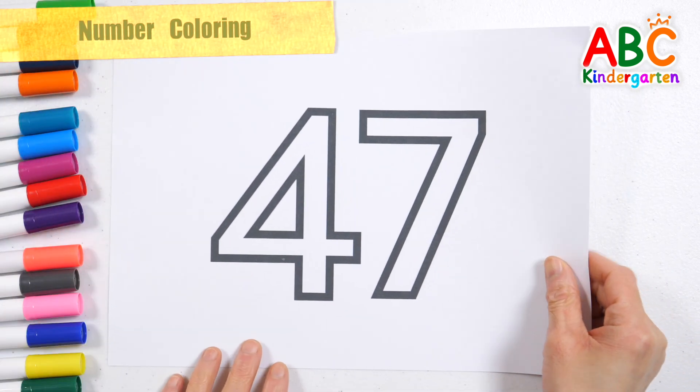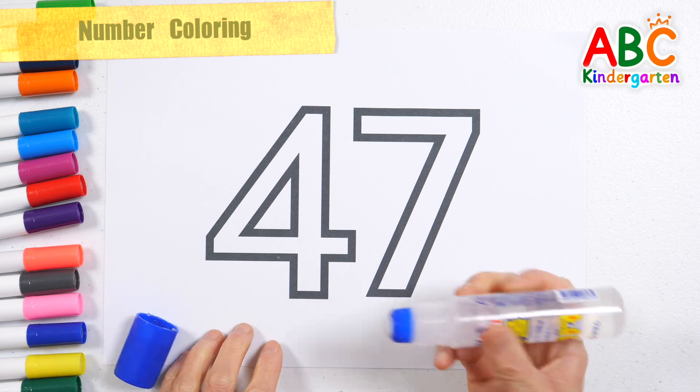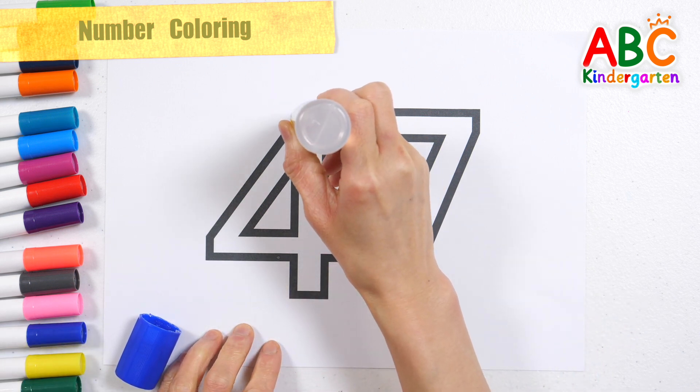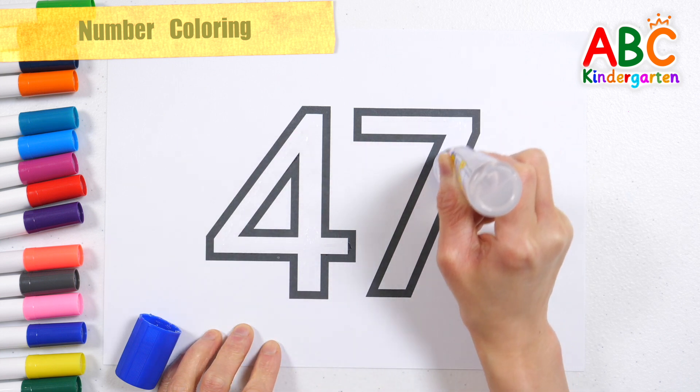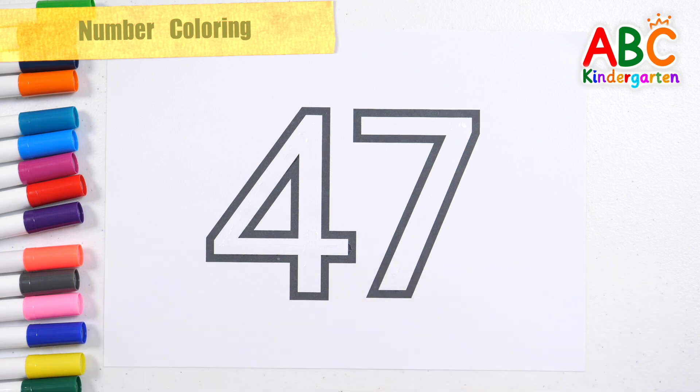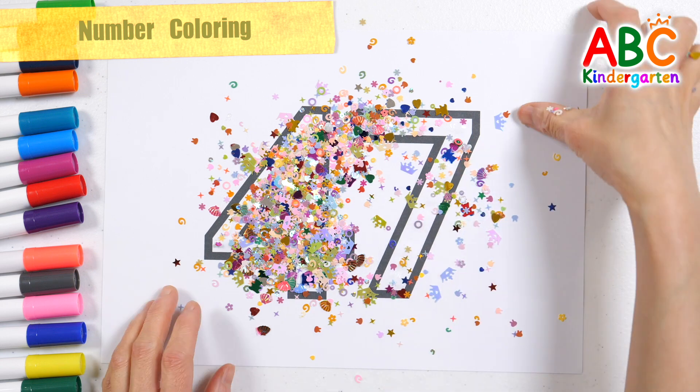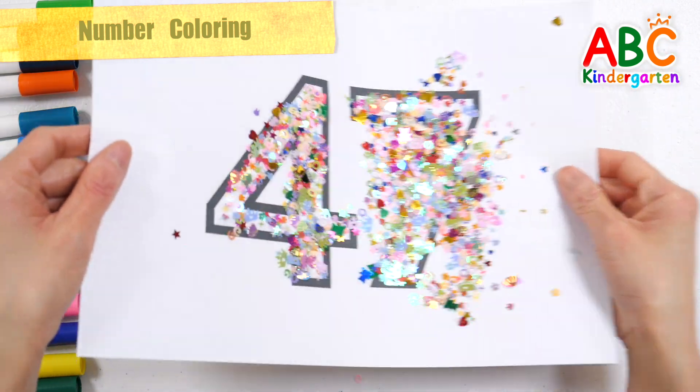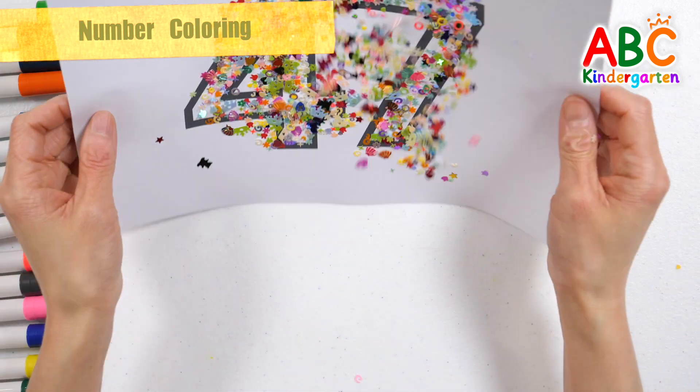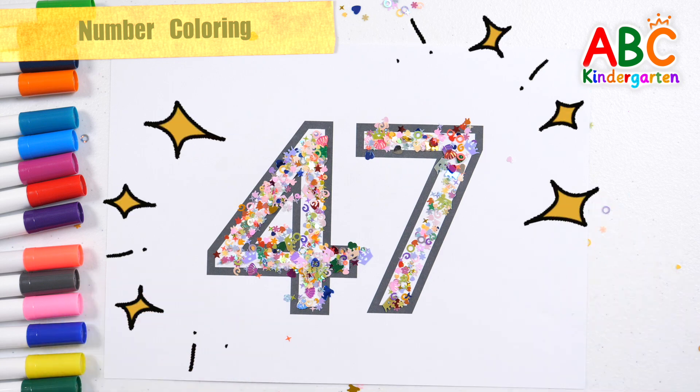Number forty-seven. Let's make up the numbers. How? Let's make the numbers pretty by sprinkling glitter on them. Shiny number forty-seven.